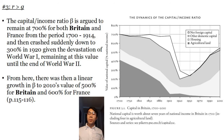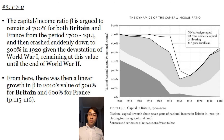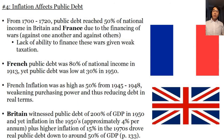The capital income ratio beta is argued to remain at 700% for both Britain and France from 1700 to 1914, crashing suddenly down to 300% in 1920 given the devastation of World War I, then growing linearly to 2010's value of 500% for Britain and 600% for France. From 1700 to 1720, public debt reached 50% of national income in Britain and France due to financing wars. French public debt was 80% of national income in 1913, yet only 30% in 1950, right after World War II. French inflation was as high as 50% from 1945 to 1948, weakening purchasing power and thus reducing debt in real terms.